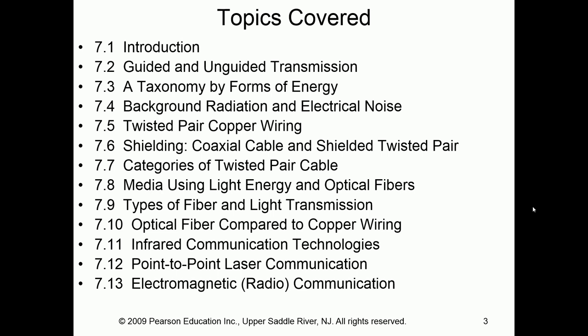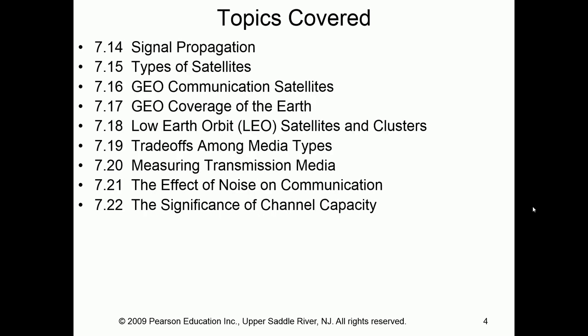Section 7.5 gets into our guided, more specifically our copper-based portion. Section 7.8 gets into our guided fiber optic. Then after that we get into our lasers and infrared. Section 7.13 gets into our wireless or unguided transmission. Within that we have to talk about satellites — our GEOs, our LEOs, our medium-range satellites. Around 7.19 we start talking about trade-offs among the different types of transmission media, trying to figure out which one's best. Then we end with noise and channel capacity.